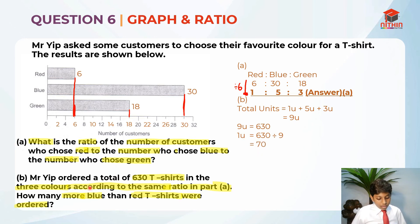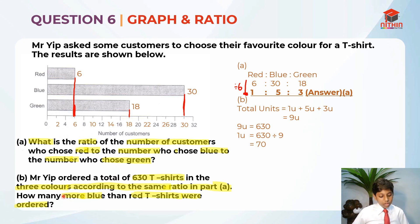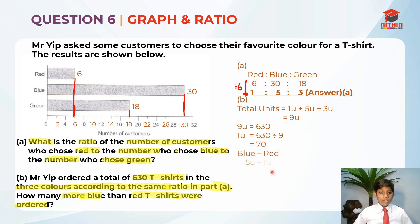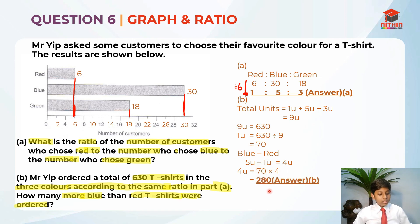They told us he ordered in the same ratio as part A. The question asks how many more blue than red t-shirts were ordered. Blue is 5 units and red is 1 unit, so blue minus red is 5 units minus 1 unit, which is 4 units. So we find 4 units: 70 times 4 equals 280. So 280 is the answer for part B.